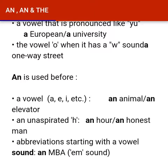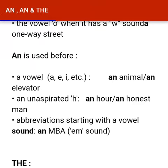Now let's look at the use of AN. AN ka istemal ek vowel sound se pehle hoga. Lekin yeh bhi jaanna zaroori hai — jaise silent H: 'hour' — hum usse 'avar' kehte hain, aur 'honest' mein bhi H silent ho jaata hai. Isliye unke pehle AN ka istemal karenge — 'an hour,' 'an honest.'